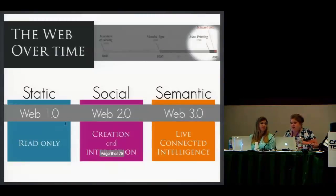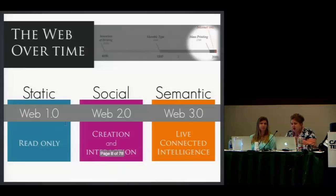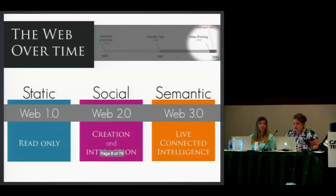We've seen trends in the web so far. It started off with just information being pushed out, and then the last 10 years was really the social web — you have the interaction, blogs, comments, not having to know code to put information out or interact. And then we've started into the age of the semantic web, which is kind of exciting, but not today.